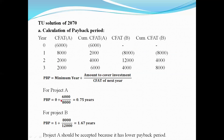In Project A, we have a cumulative rate. In the zero year, the investment is negative 6,000. In the zero year, the amount of investment is 6,000. The CFAT for year one will be 8,000. This gives us 6,000 divided by 8,000, which equals 0.75 years. So the payback period for Project A is 0.75 years.